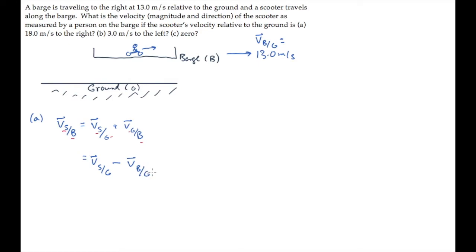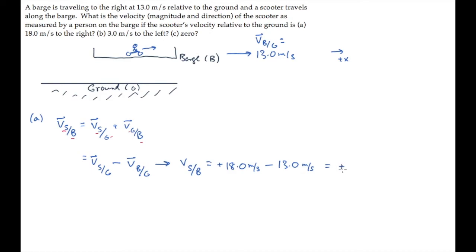Now substitute the values. We're told that the scooter's velocity relative to the ground is 18 meters per second to the right. If we let to the right be the positive x direction, this becomes plus 18 meters per second, minus the velocity of the barge relative to the ground, which is 13, and you get 5 meters per second.